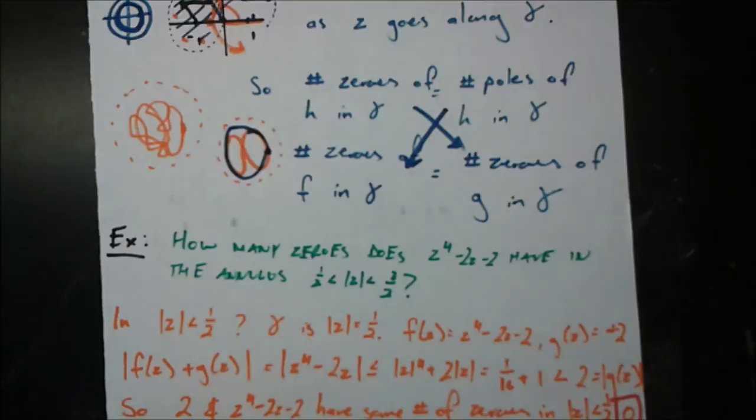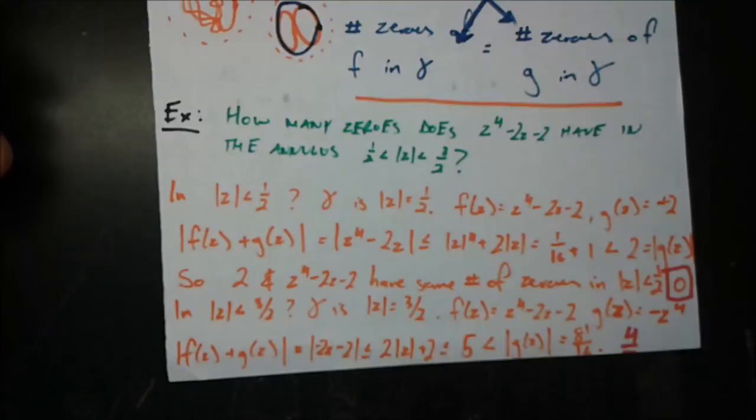That means the number of zeros of f in gamma equals the number of zeros of g in gamma, and we have proved Rouché's theorem.